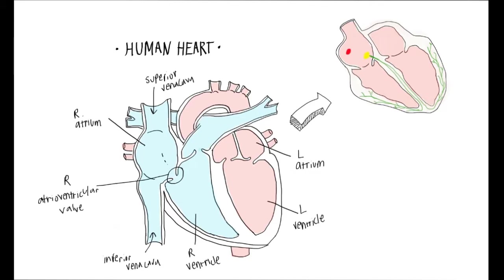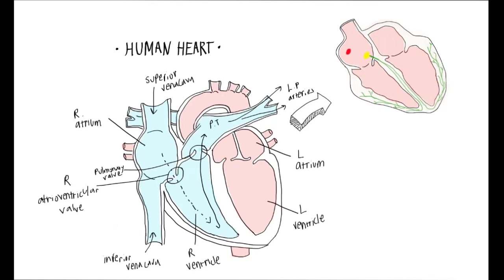When the right ventricle is filled with blood coming in from the right atrium, it ejects the blood out into the pulmonary trunk by the opening of the pulmonary valve. The blood then goes out through the pulmonary arteries — here are the left pulmonary arteries, and these are the right pulmonary arteries. Both send the blood back to the lungs to be reoxygenated.